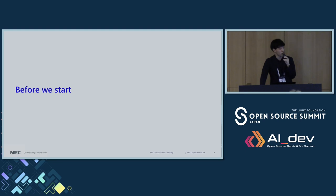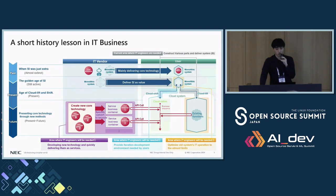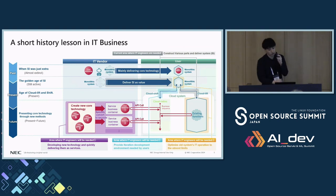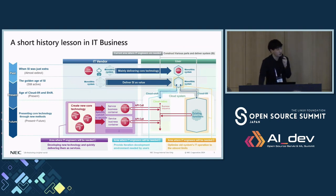Before we start on the main topic, let's take a small moment to look back at the history of the IT industry to set some context. While I'm sure most of you are familiar with the cloud-centric industry we have today, let's take a step back and look at what came before. Initially, machines and systems were tightly coupled together — one system was dedicated to each machine. Even today, some legacy systems still operate this way, making it difficult to migrate them to the cloud.